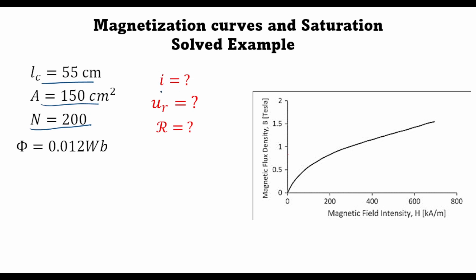The current required to produce a flux of 0.012 Webers. We will also find out the relative permeability of the material at that magnetic flux density, and for that we are given this B-H curve. And finally we are also interested in finding the reluctance of the magnetic material.